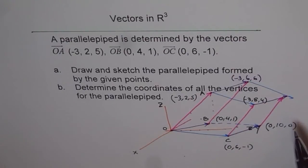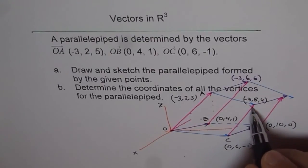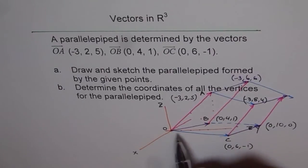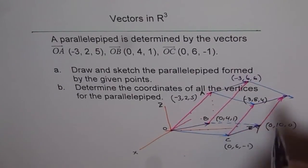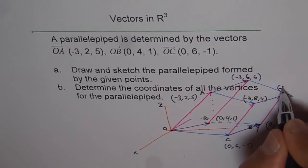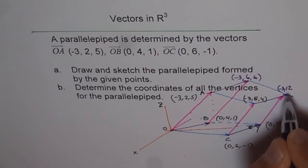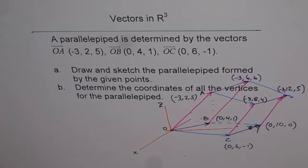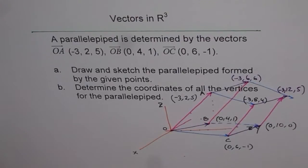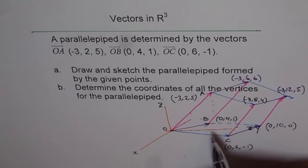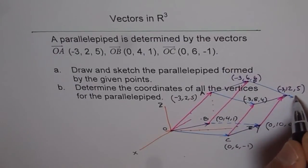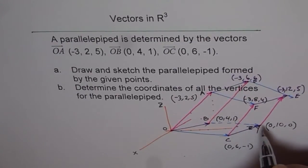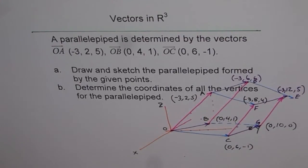Keep on adding the points to get the next point. Now this point should be, we are already here with (-3, 8, 4). And we need to go in this direction, which is the direction of OB. So we will add (0, 4, 1) to this and get our point. And this point should be (-3, 12, 5). So like this, we can get all our points. And then you can, of course, label it. We already have A, B, C, and then we can write D, E, F, and G. So you get your parallelepiped and you get all your points as shown here.